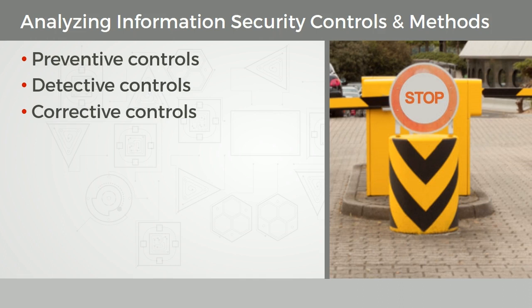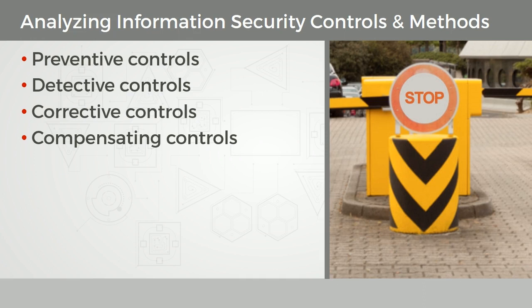A compensating control is typically an internal control that's reducing risk — reducing the risk of existing or potential vulnerabilities, for example errors, omissions, human error, misconfiguration. Compensating controls, like corrective controls, are going to focus on addressing impact.